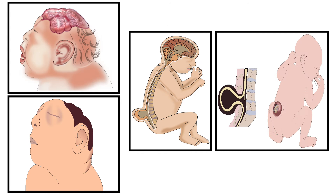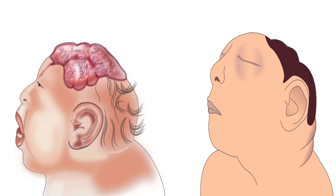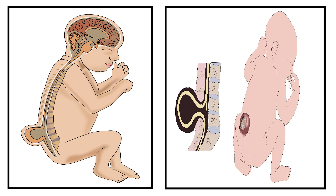The two most common neural tube defects are anencephaly and spina bifida. In anencephaly, parts of a baby's brain and skull do not form correctly. In spina bifida, the baby's spine does not develop properly.